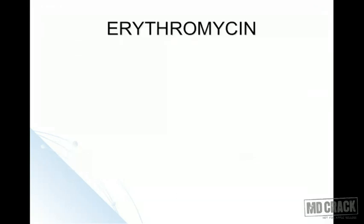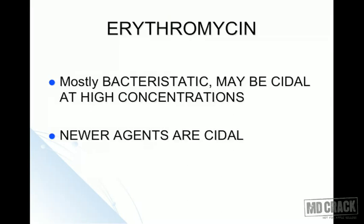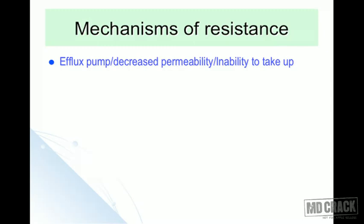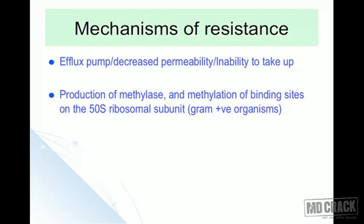Erythromycin is mostly bacteriostatic but may be bactericidal at high concentrations; the newer agents are mostly bactericidal. Mechanisms of resistance include: first, an efflux pump leading to decreased permeability or inability to take up the macrolide; second, production of methylase causing methylation of the binding site on the 50S ribosomal subunit, mainly practiced by gram-positive organisms.